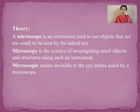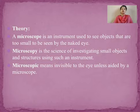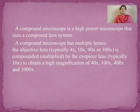Microscopy is the science of investigating small objects and structures using a microscope. Microscopic means objects which are very small and not visible to the naked eye — they can only be seen with the help of a microscope. Now coming to the compound microscope: there are basically two types of microscope — simple and compound.